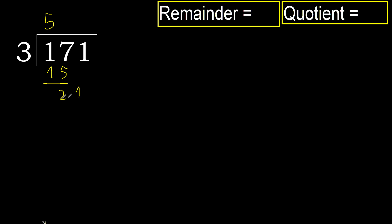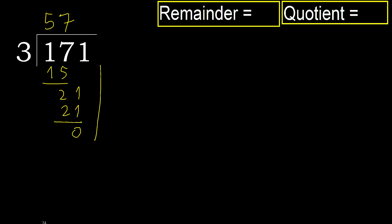Next, 21. 3 multiplied by 8 is 24 — 24 is greater. 3 multiplied by 7 is 21 — 21 is not greater. Okay, subtract 0. That is not a remainder, therefore finish. The division is complete.